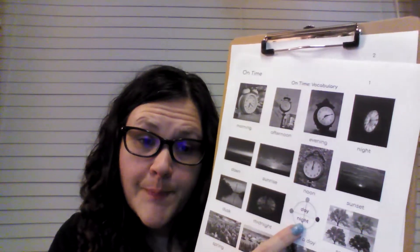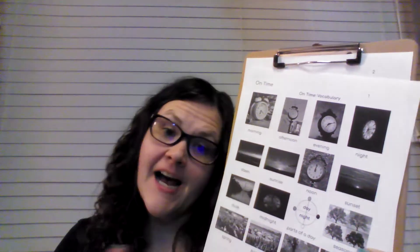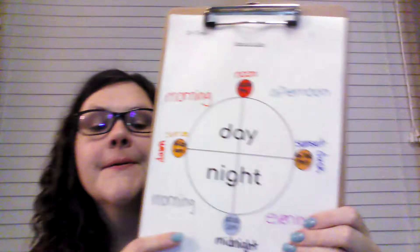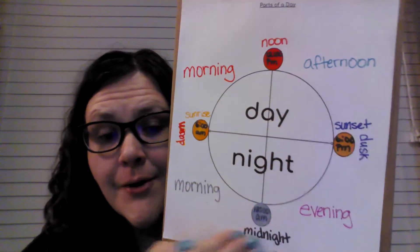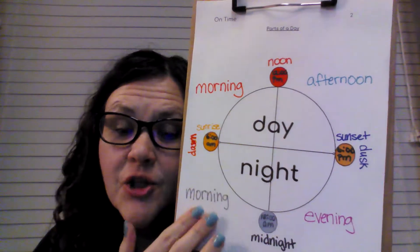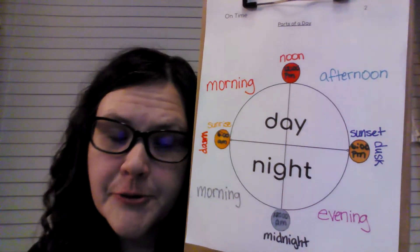Hello, Amanda here from ESL International. We did our Unit 5 vocabulary for 'on time.' We're going to use these words for parts of a day, the time clock, a 24-hour clock. So you can see we have a 24-hour clock. You can download a blank in the description below.